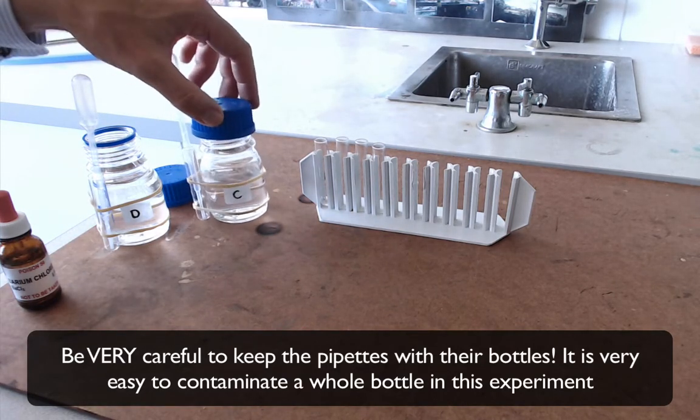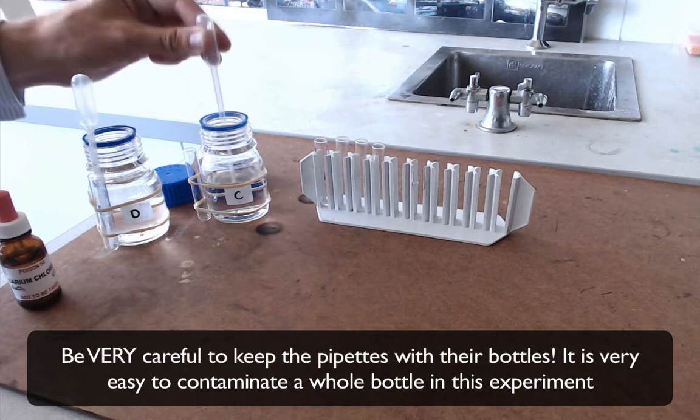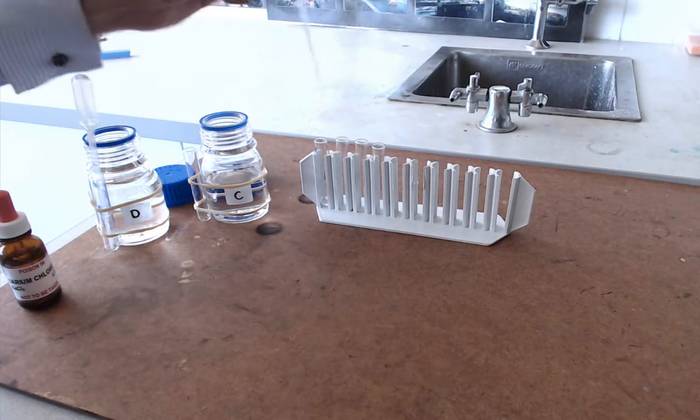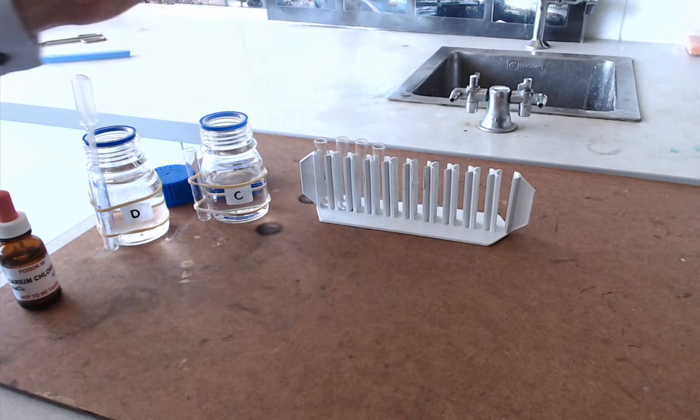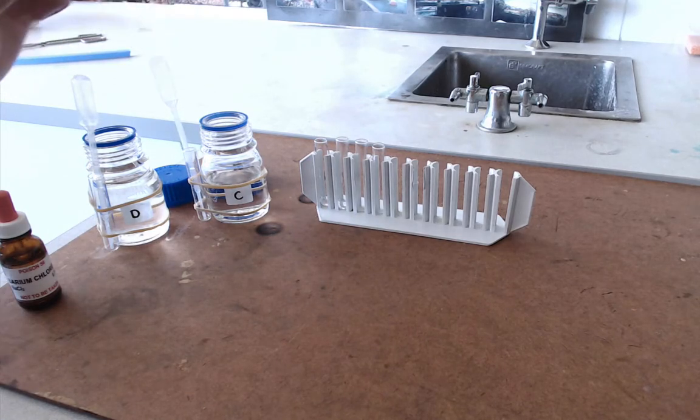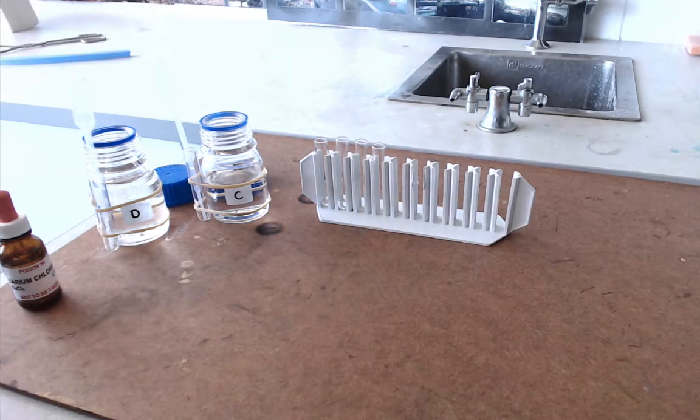Then take a few drops of your other substance that you're testing. So in this case I've got C and I'm going to put a few drops of that into a different test tube. Now be really careful where you put your pipettes after you're done.